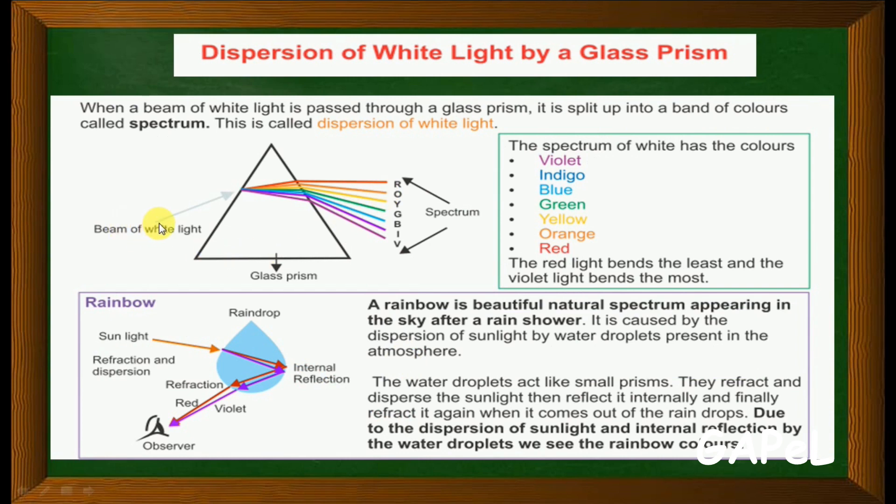The beam of light will bend at the air-glass interface and again it will bend at the glass-air interface. When white light is incident, it gets dispersed into seven different colors like a rainbow. The topmost color is red and the bottom is violet - red, orange, yellow, green, blue, indigo and violet. That is called the spectrum of white light, or VIBGYOR.